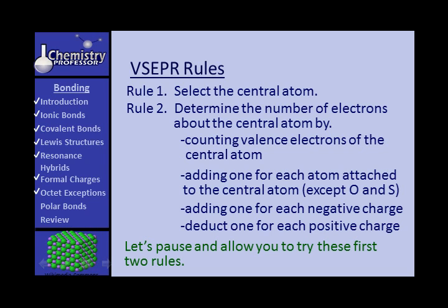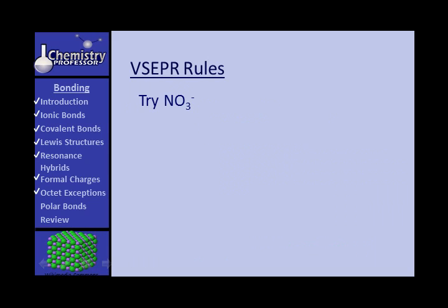You add one for each negative charge and deduct one for each positive charge. Let's try these first two rules. For NO3⁻, the central atom is nitrogen with five valence electrons. You don't count anything for oxygen since it's not central. You add one for the negative charge. So it's five plus zero plus one equals six.